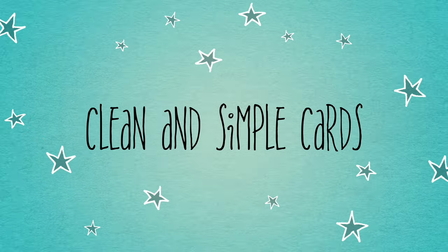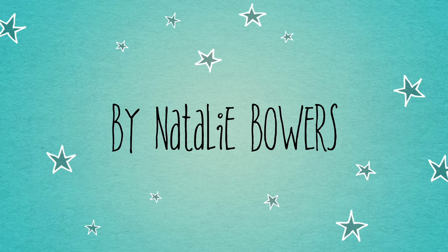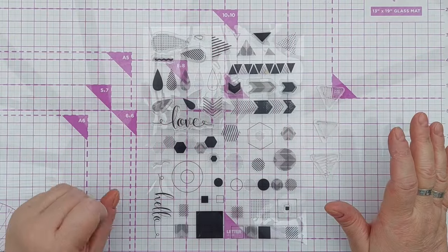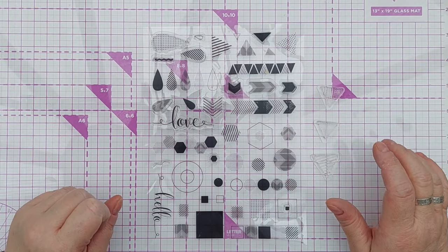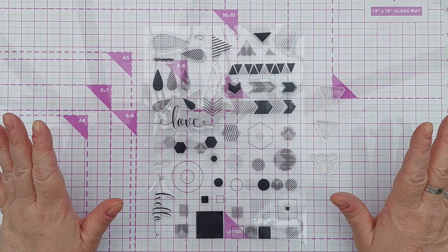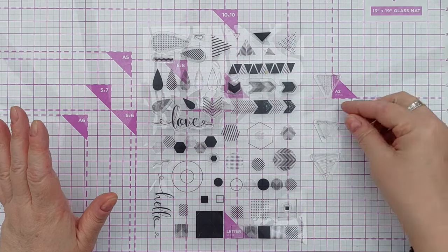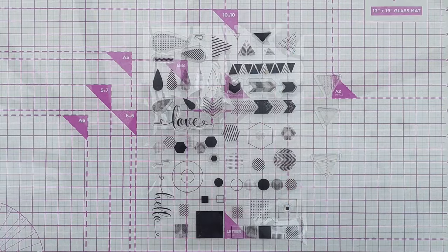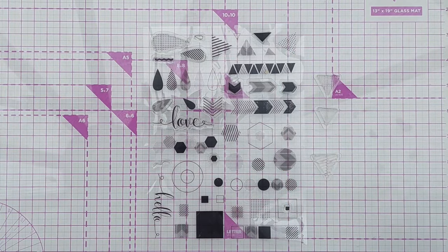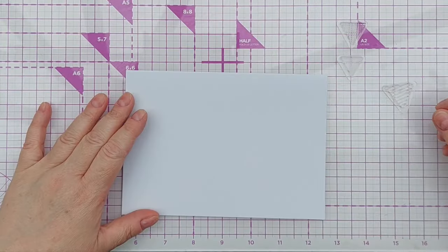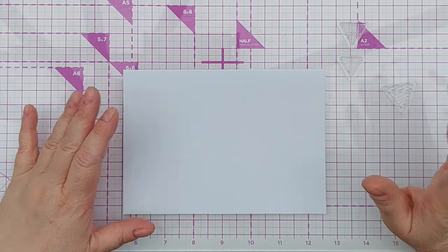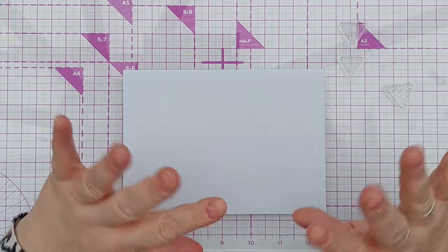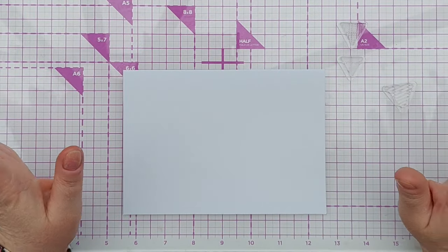Hello crafty friends, welcome to another in our geometric shape series. Today we're going to be working with triangle stamps, and I'm using these three from this stamp set. Don't worry if you haven't got this stamp set, you can use whatever stamps you fancy.